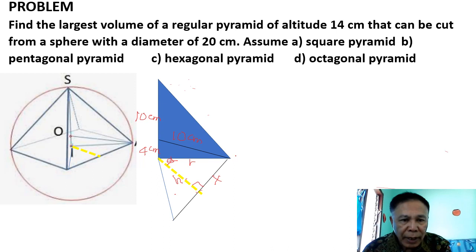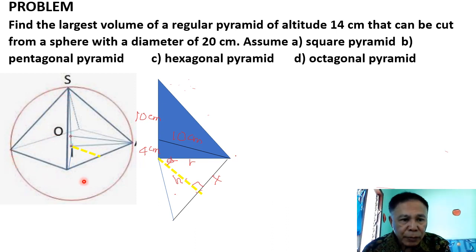So you are going to solve for R. From this diagram, a regular pyramid is inscribed in a sphere. You have 10 centimeters, 10 centimeters, 4 centimeters, your R, your H, and your X. You need to compute the area of this triangle.